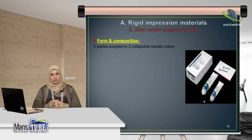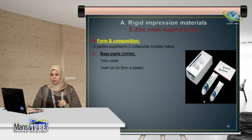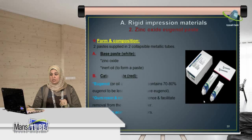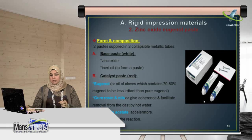The next rigid impression material is zinc oxide eugenol impression material. It comes in the form of two pastes in two collapsible tubes. The first paste is the base paste, which is white, and contains zinc oxide and inert oils. The catalyst paste is red and contains eugenol, gum rosin, an oil, magnesium chloride or zinc acetate as accelerators, and moisture — which is a very important component.